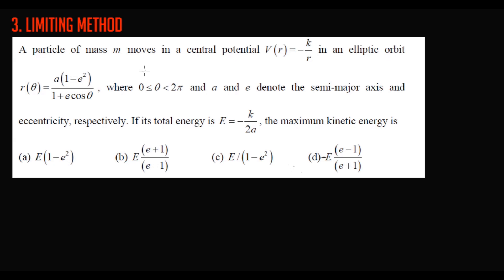The question: a particle of mass M moves in a central potential V = −K/R in an elliptical orbit. The orbit equation is given with 'a' denoting the semi-major axis and 'e' the eccentricity. The total energy is given as −K/2a. Find the maximum kinetic energy.